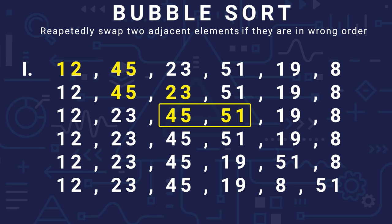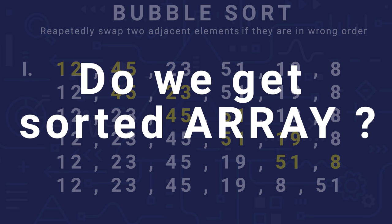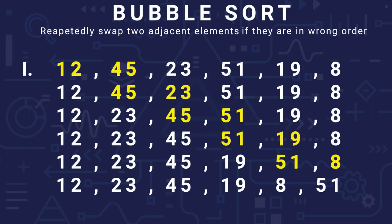Next we compare 45 with 51 — they are in the right order, so we do nothing. Now we compare 51 and 19 — they are in the wrong order, so we swap them. Next we compare 51 and 8 — wrong order again, so we swap them. But have we got a sorted array yet? No, not yet.